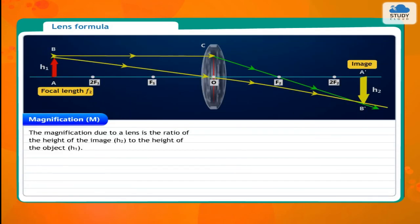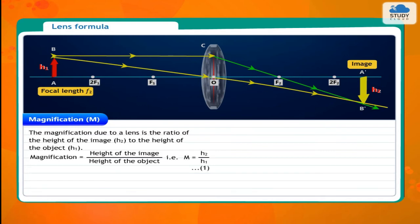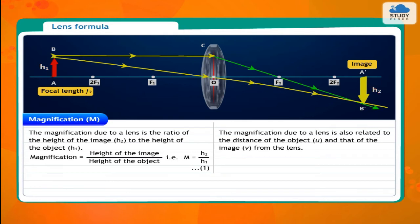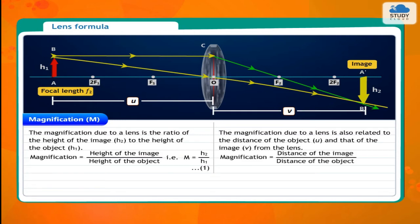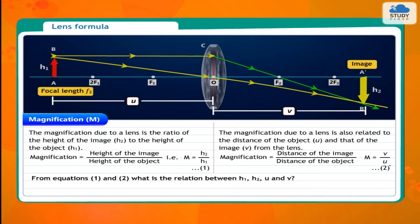Magnification M is the ratio of the height of the image H2 to the height of the object H1: M = H2/H1 (equation 1). The magnification due to a lens is also related to the distance of the object U and the image V from the lens: M = V/U (equation 2). From equations 1 and 2, the relation between H1, H2, U and V is: H2/H1 = V/U.